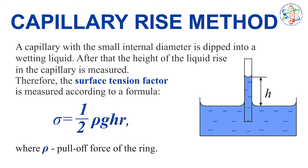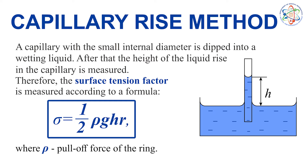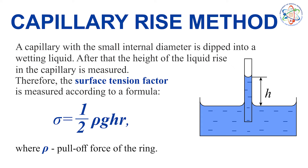The second method for measuring the surface tension is the capillary rise method. A capillary with a small internal diameter is dipped into a wetting liquid, and the height of the liquid rise in the capillary is measured. Therefore, the surface tension factor is measured according to the formula: σ = (1/2) × ρ × g × h × r, where ρ is the density of the liquid, g is the acceleration of gravity, h is the height of the capillary rise, and r is the capillary radius.